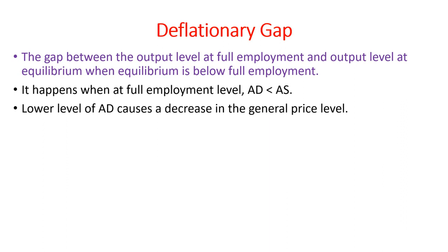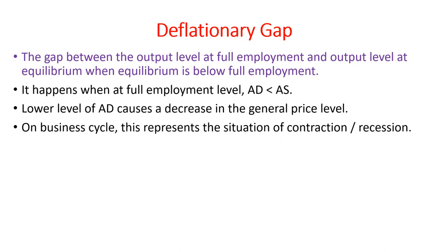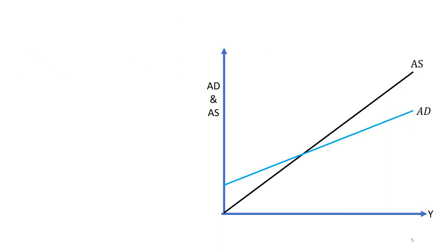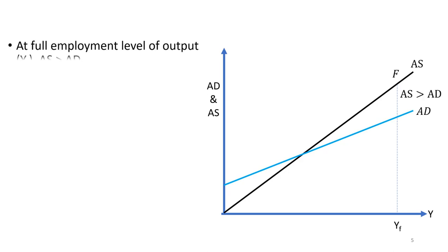On the business cycle, this represents the situation of contraction or even recession. This could be because of a lower level of economic activities or because of less government expenditures. Let's try to understand it with the help of a diagram. Suppose the economy's full employment level is represented by point F on the aggregate supply curve, corresponding to YF level of output. However, at this level of output, aggregate supply is higher than aggregate demand, which results in increasing unplanned inventory investment and causes price levels to fall.